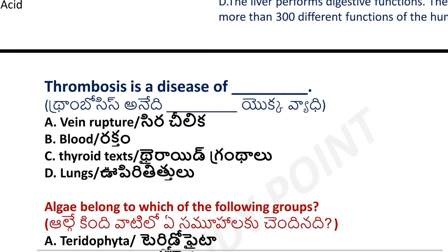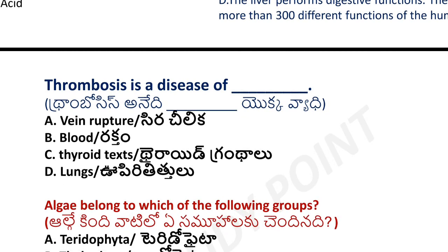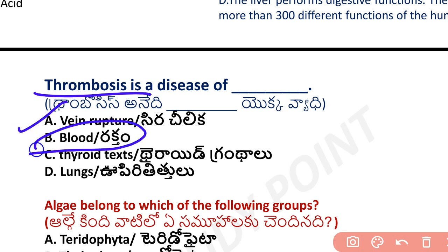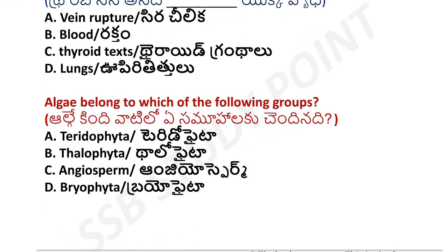Next question: thrombosis is a disease related to what? Thrombosis is related to blood. It involves vein rupture and blood-related issues. So the main cause — thrombosis is a blood-related disease.